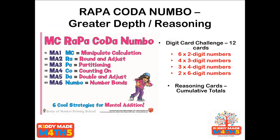If you haven't watched video one from today, it's well worth having a look at that one first. This is just basically extension activities to continue the ones you've seen on the previous videos. Use these if you're working with children at greater depth in years three and four, or generally with children who are getting much more fluent in number at years five and six. There are really only two main activities: the 12-card digit card challenge, and using the reasoning cards and building up cumulative totals.